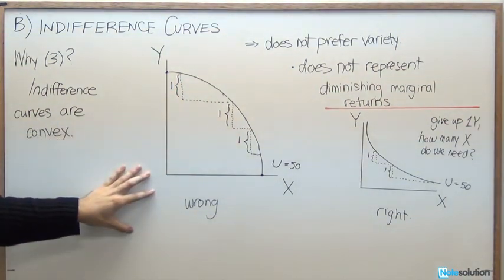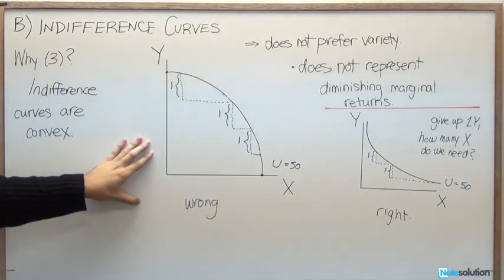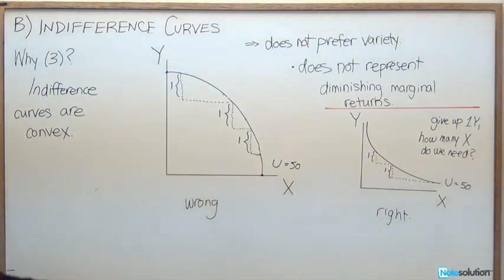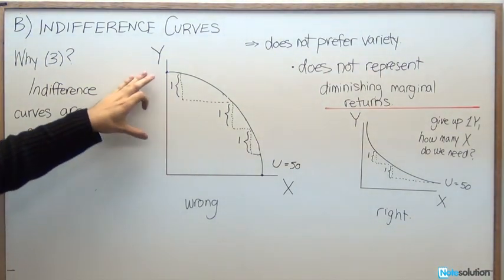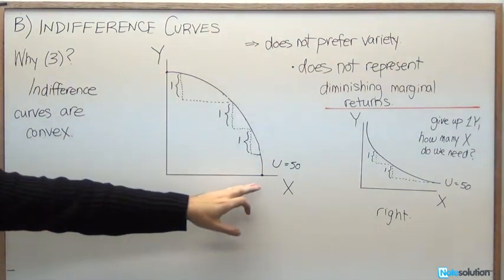So why exactly is that important? Well, we're going to say here in this wrong indifference curve diagram that this particular person does not prefer any variety. So that's to say that they're going to get the same value consuming all of good y or all of good x.